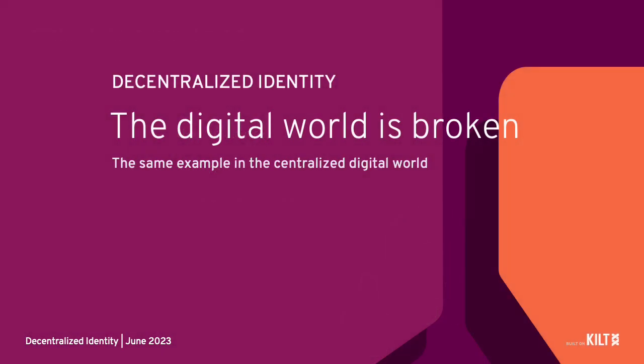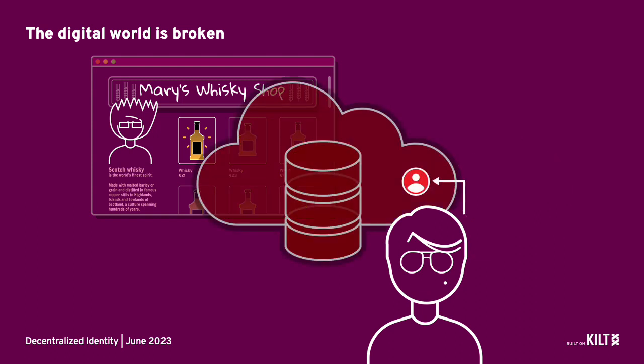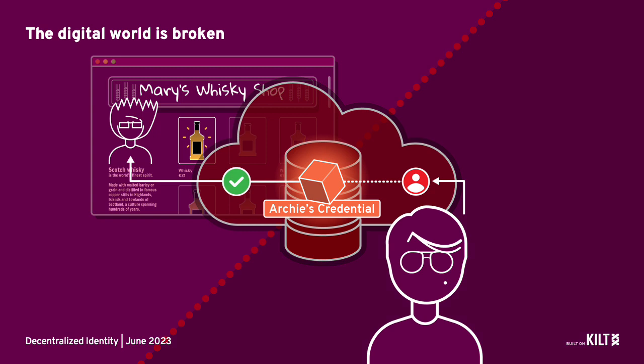In the digital world, the current system of identity is broken. When Archie goes to buy his whiskey from Mary's online shop, he has to go through a third party, create his identity using an identifier issued to him by others, and there is no direct connection between Archie and Mary. His identity is held in a central database, not under his control. This also means that his information is at risk of being hacked and can be used for profiling, tracking or sold for profit.